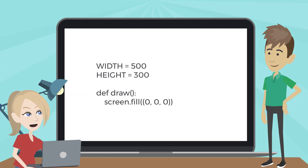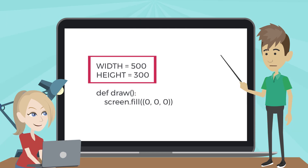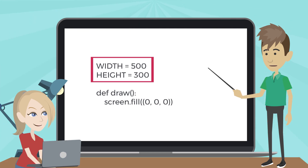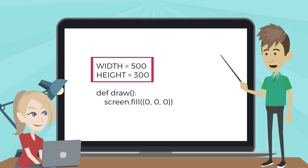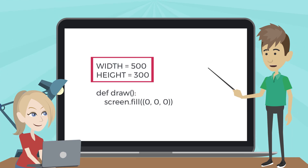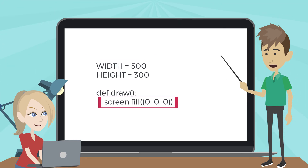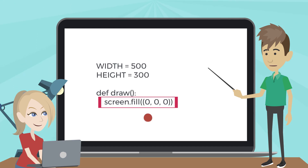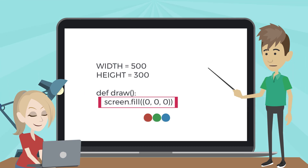What is this code doing? Width and height control the width and height of the window. This code sets the window size to 500 pixels wide and 300 pixels high. The screen.fill method call is filling the screen with a solid color, specified as a red-green-blue color tuple. 0, 0, 0 will be black.